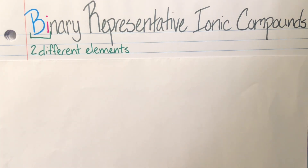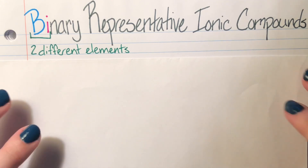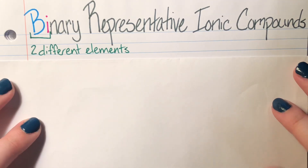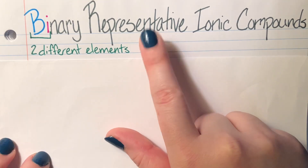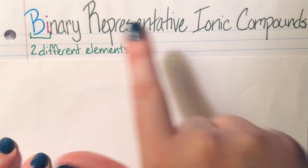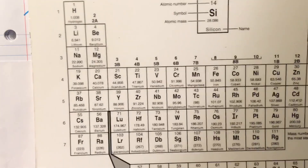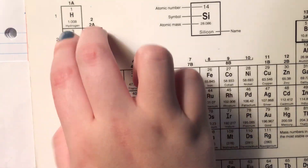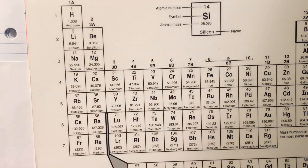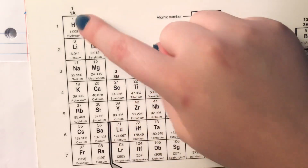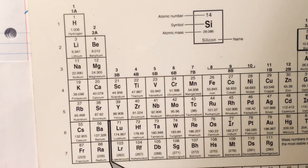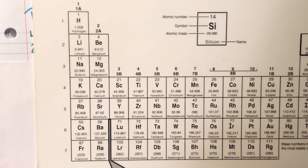Binary ionic compounds have two different elements coming together to make one single compound. 'Representative' in the title means they come from the first two columns of the periodic table. They are called representative because their column number represents how many valence electrons they have, and also how many valence electrons they are willing to give away.